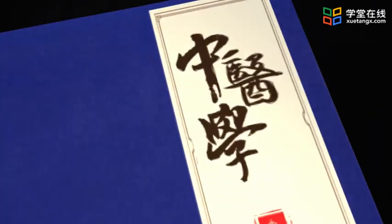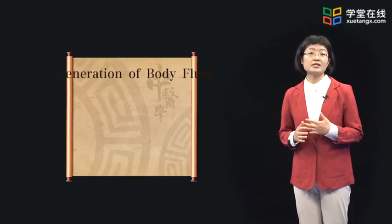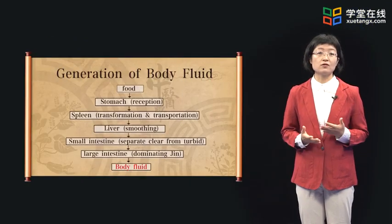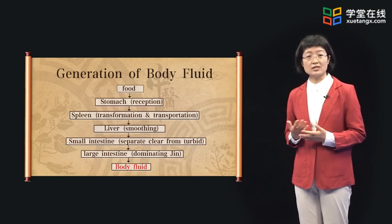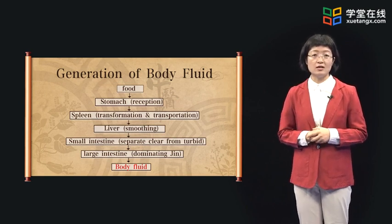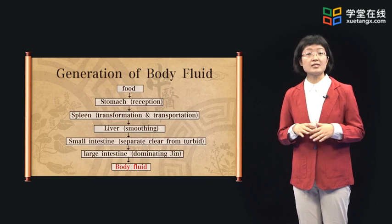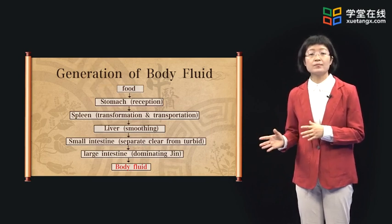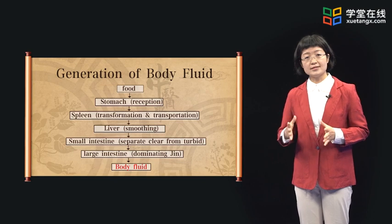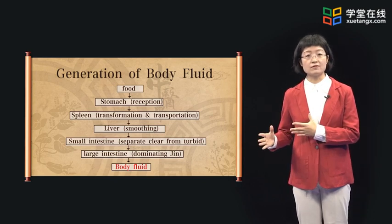Body fluid is a general term for all normal liquids in the body, including the secretions from organs and tissues, such as gastric fluid, intestinal fluid, tears, etc. Body fluid is generated from food through the physiological functions of the spleen, stomach, small intestine, and large intestine. The generating process is similar to blood. According to TCM, body fluid and blood share the same source, which is food essence.